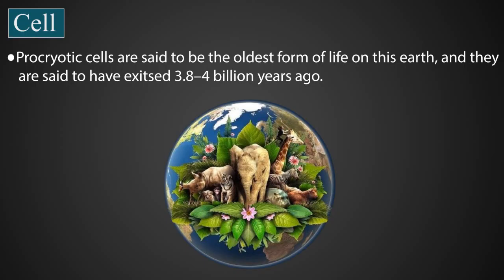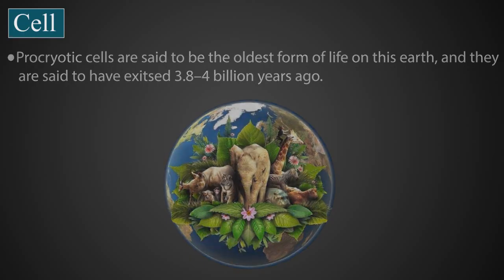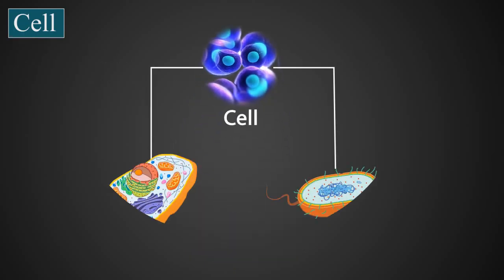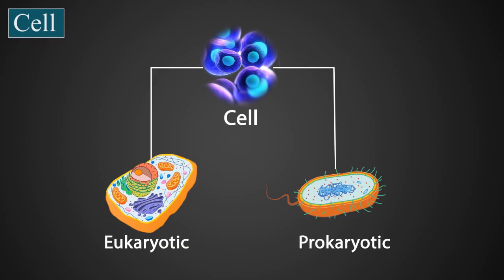So friends, we have learned what is a cell, the two basic types of cells, and the two basic types of organisms. We will learn about the cell, its structure, and its parts in more detail during our next section.